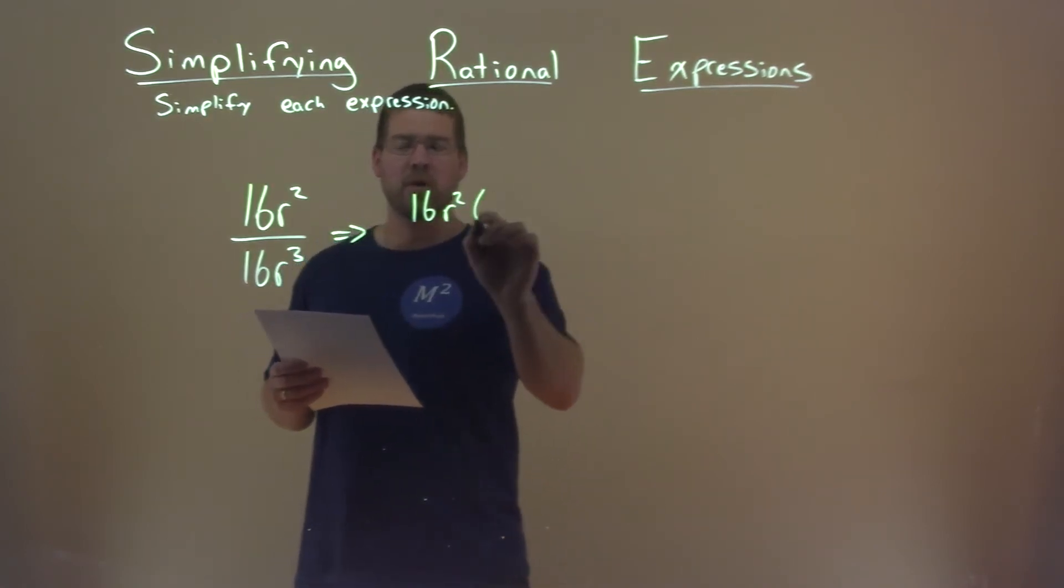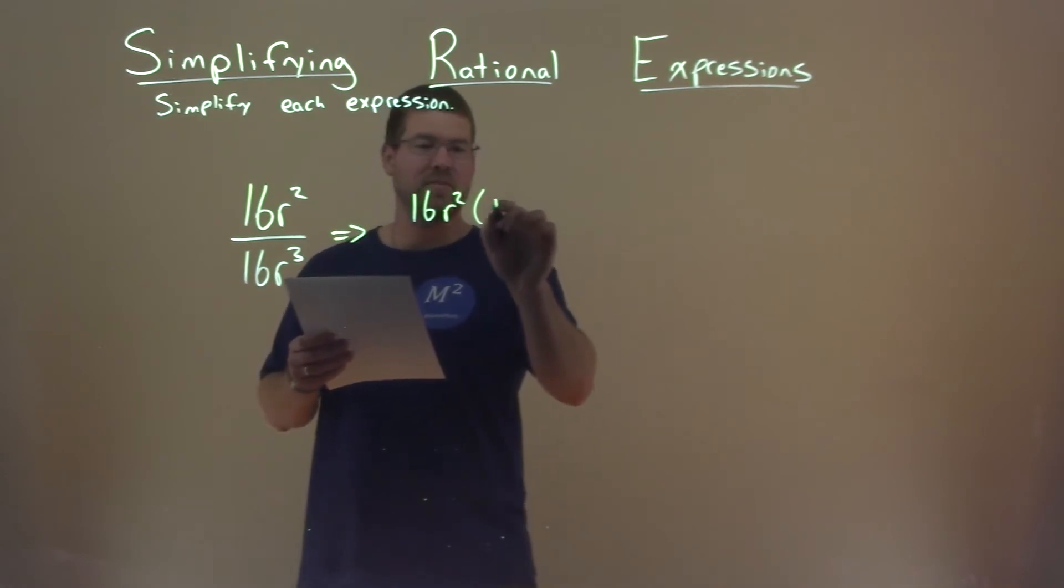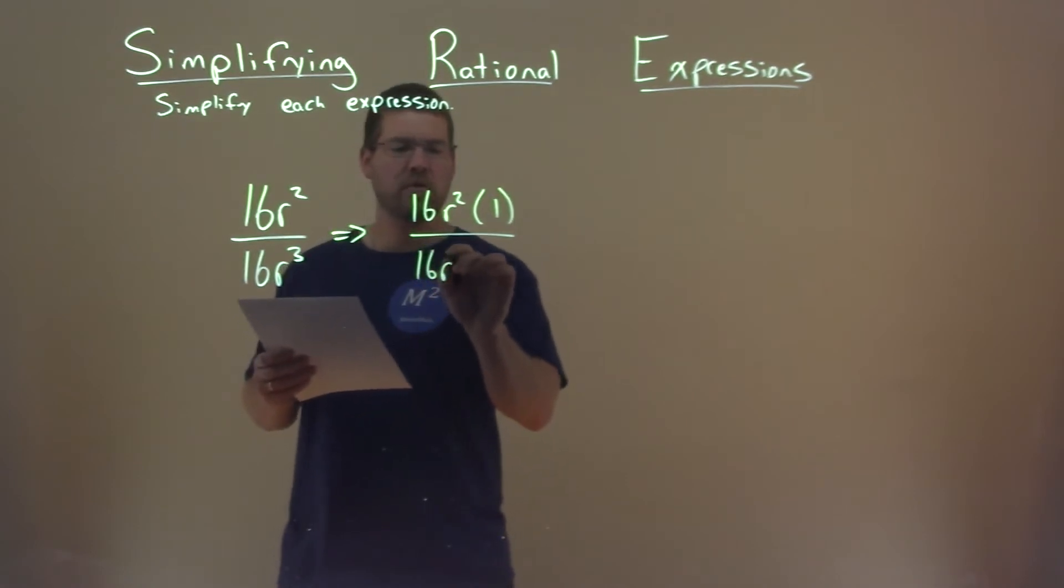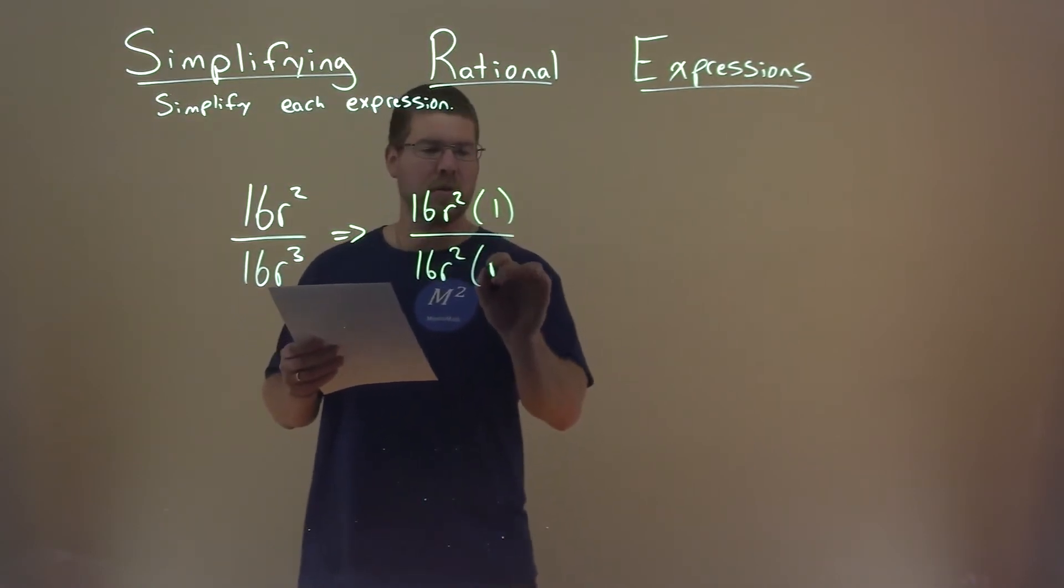So if I pull that out from the numerator, I'm left with just 1, right? The denominator, I can pull out a 16r squared, and I'm left with r.